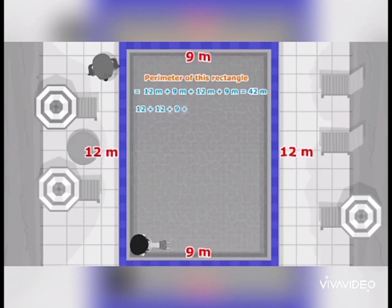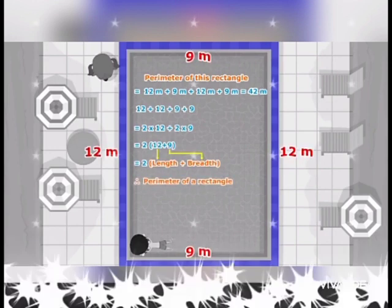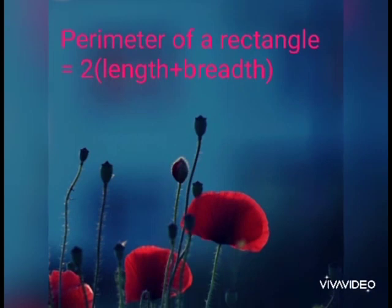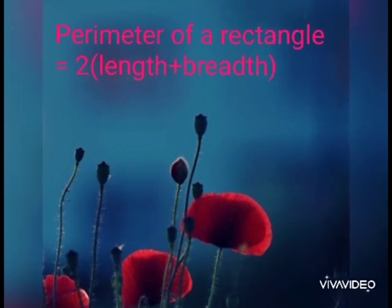If we rearrange these numbers, we get the formula of perimeter of a rectangle. That is, the perimeter of a rectangle is equal to twice of length plus breadth.